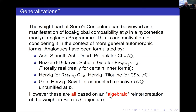But as I alluded to before, these are all algebraic Serre weight conjectures. They're all based on an algebraic reinterpretation of the weight part of Serre's conjecture, which Hanukkah discussed in her talk. Let me say a little bit about where this comes from and where the deficiency is in these versions of the weight part of Serre's conjecture.